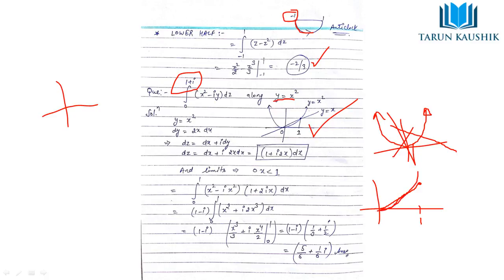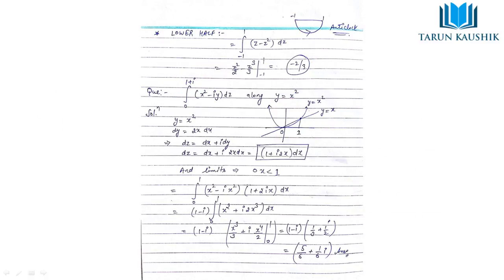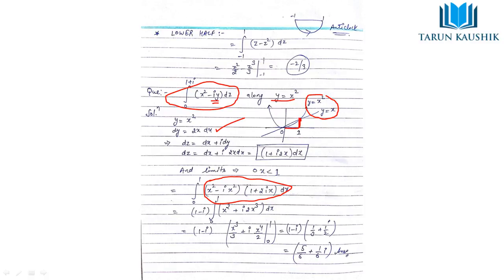The parabola is y = x², so we eliminate y by substituting x² for y, and dy becomes 2x·dx. We replace the integrand (x² − iy) dz with the expression in terms of x only. The limits in terms of x are from 0 to 1, since the point of intersection is at x = 1. After performing the integration and substituting the limits, you get the final answer.